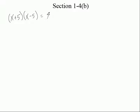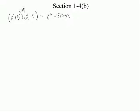So I get x times x, which is x squared. The outside is negative 5x, and the inside is plus 5x. It's zero, isn't it? Technically it's minus 5x plus 5x — they cancel. And then it's minus 25. If we simplify that, the middle terms are zero, so it's just x squared minus 25. Agree?